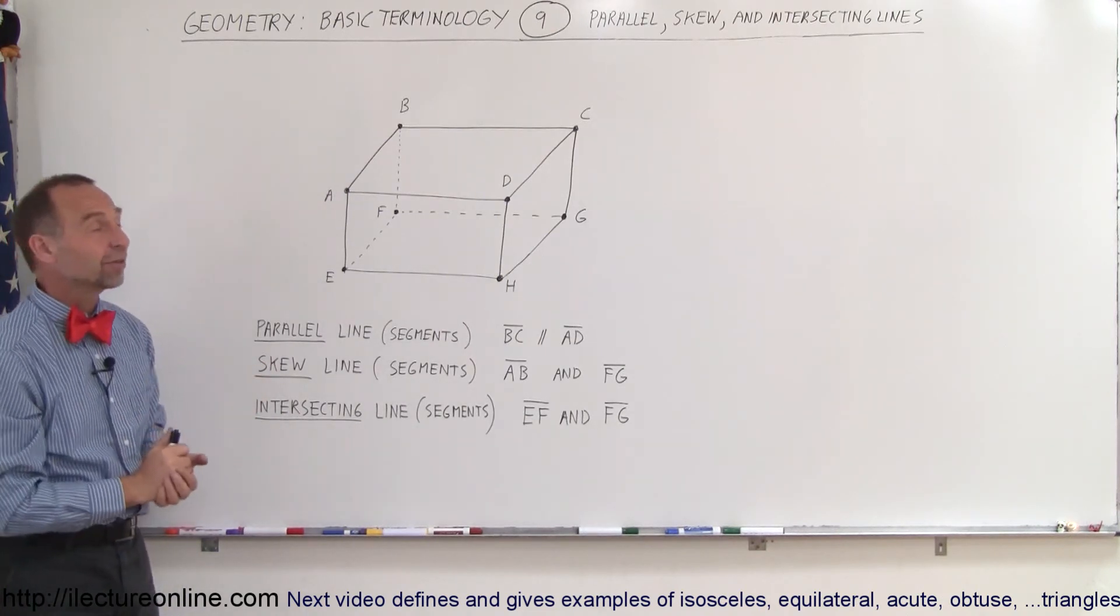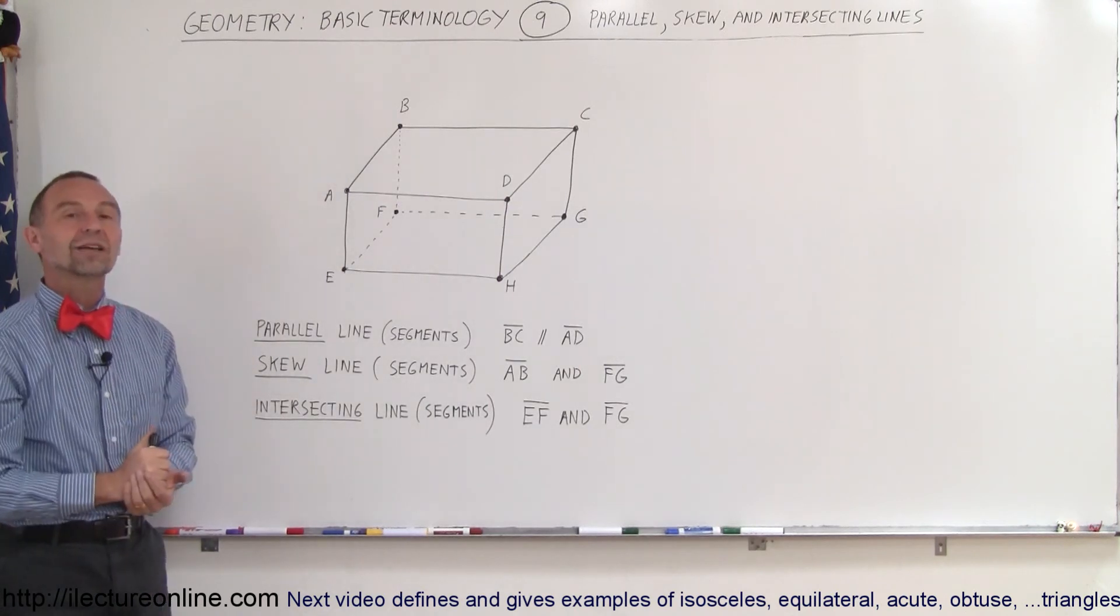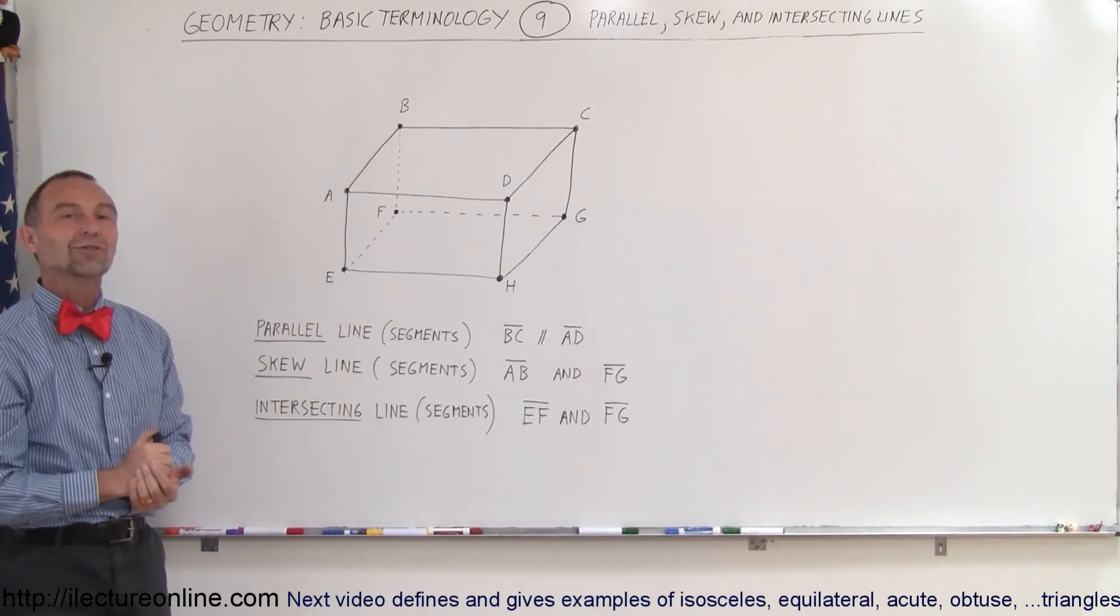In this case, they're line segments. So that's the difference between parallel, skew, and intersecting lines or line segments. And that's how we do it in geometry.